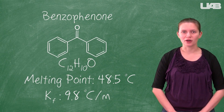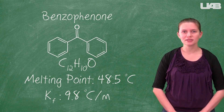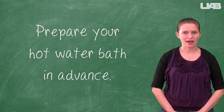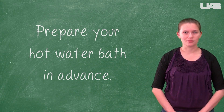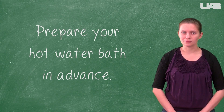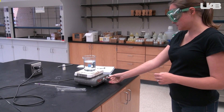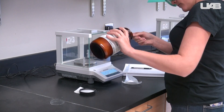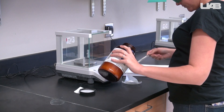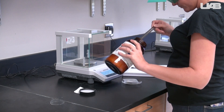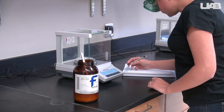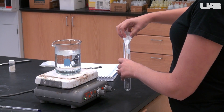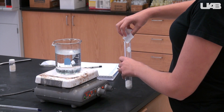In Exercise 1 you will be observing the freezing point of pure benzophenone. You will need a hot water bath at a later point in the procedure, so before starting put a beaker of water on a hot plate and let it begin heating. You will begin by weighing out about 5-7 grams of the benzophenone and recording the mass in your notebook.